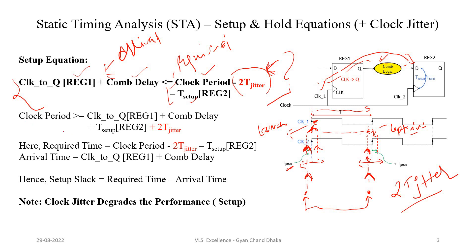If we rearrange this equation, our minimum clock period required to meet the setup requirement increases by 2T_jitter. That means our maximum operating frequency will decrease. So if our frequency is decreasing, our design performance will decrease — clock jitter always degrades performance. The required time decreases by 2T_jitter, meaning our setup slack will be decreasing, and hence our design performance will decrease.